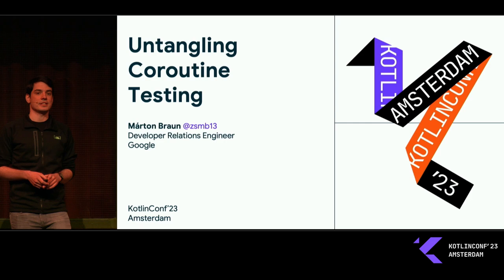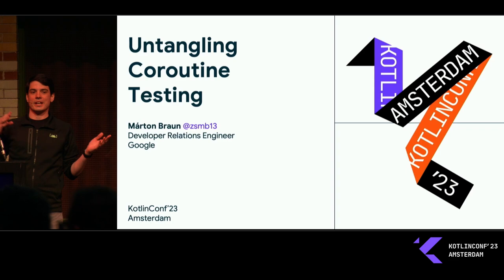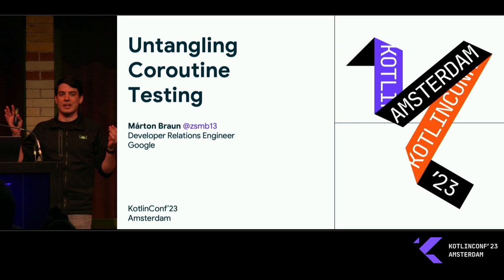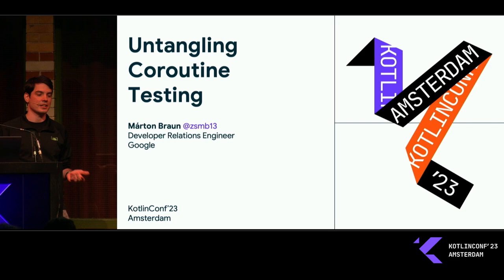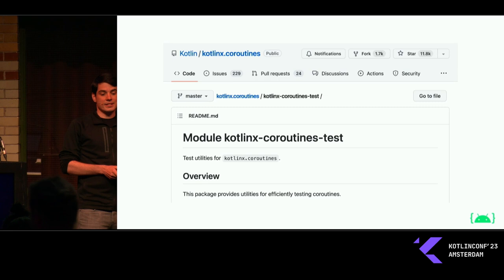As you might know, testing coroutines is not obvious. We have to be able to call suspending functions. We have to think about multi-threaded parallel code running during the tests. We have to wait for the completion of asynchronous things, and we have to manage all of that complexity somehow. So that's what we'll cover today.